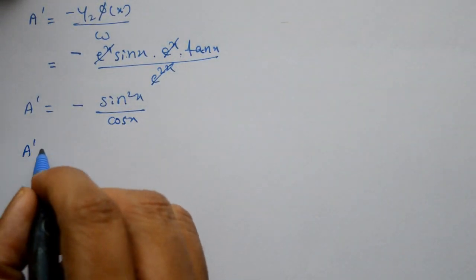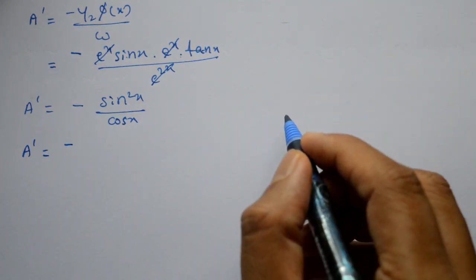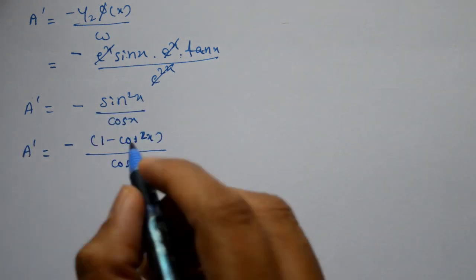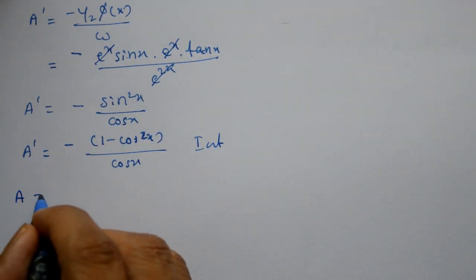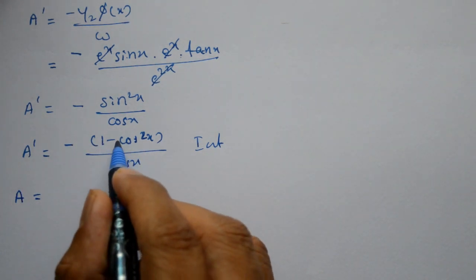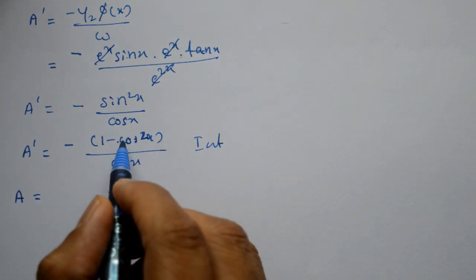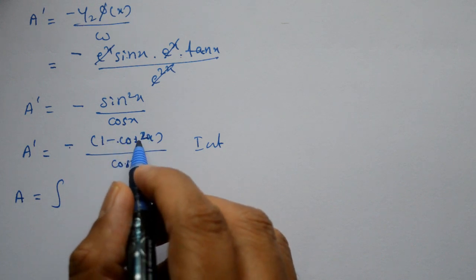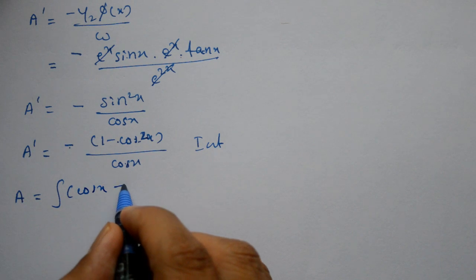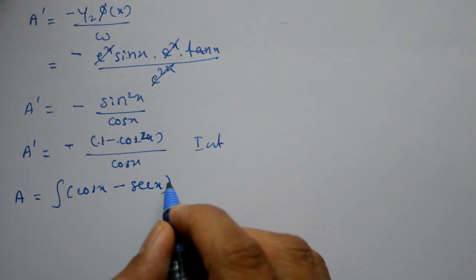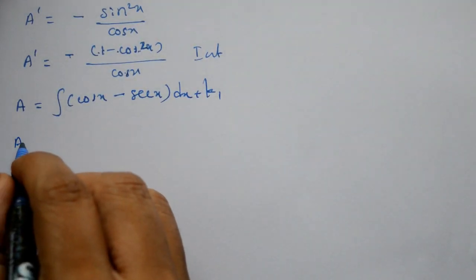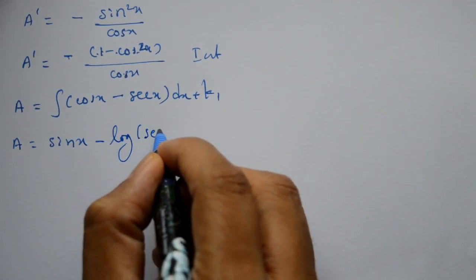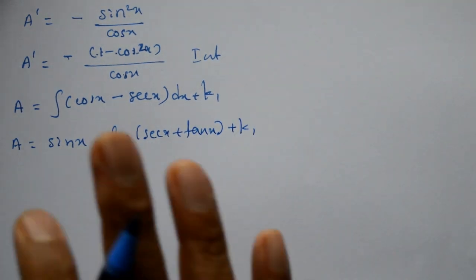Using the identity sin²x equals 1 minus cos²x, we get a' equals minus(1 minus cos²x)/cos x. Separating terms: minus(1/cos x) plus cos x, i.e., minus sec x plus cos x. Integrating both sides: a equals sin x minus log|sec x plus tan x| plus k1.